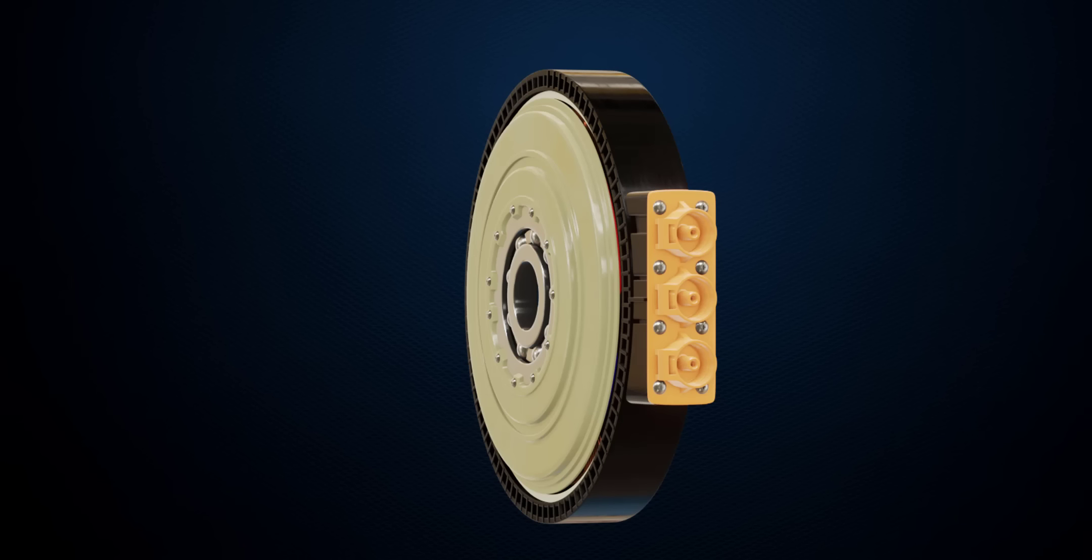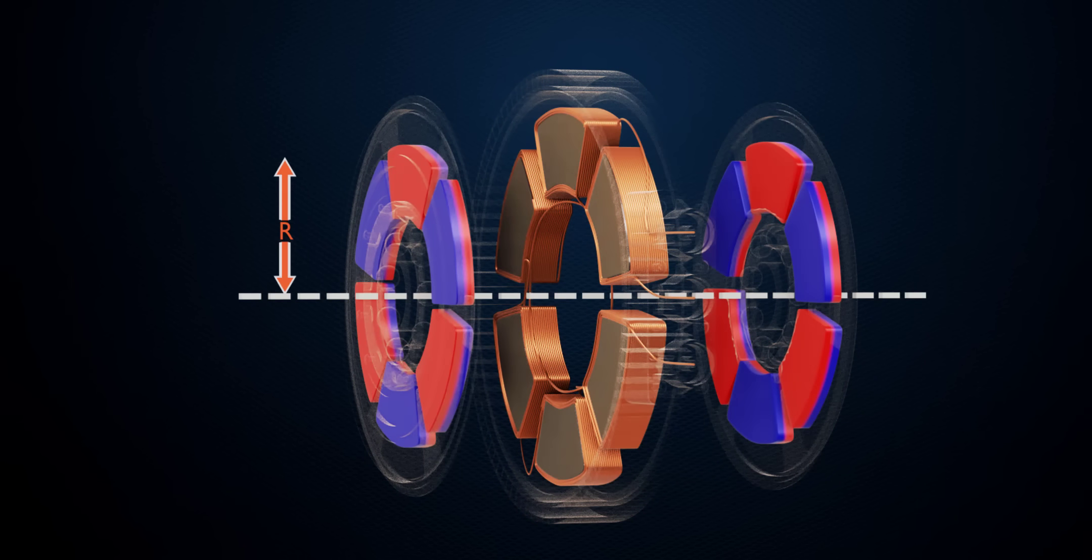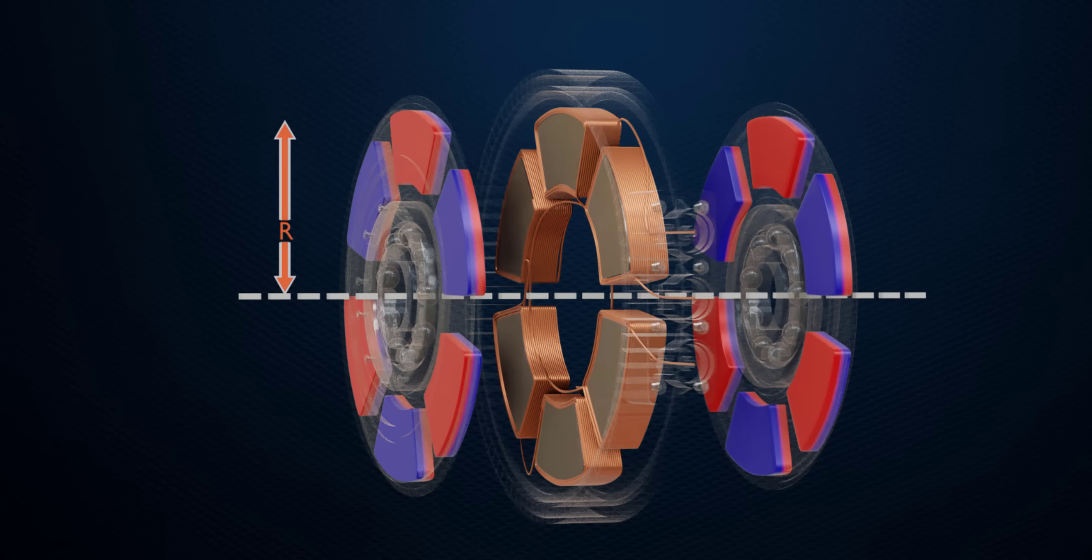The second differentiating factor is the larger diameter. In axial flux motors, the rotor magnets can be located further away from the central rotating axis. This larger radius allows the motor to generate more torque, made clear by this simple torque equation.